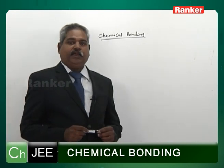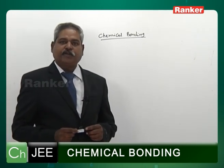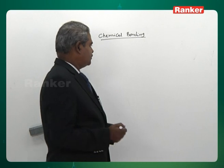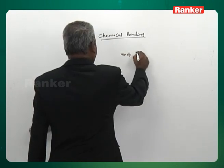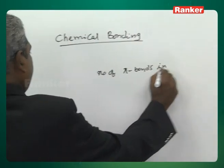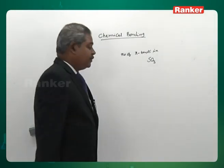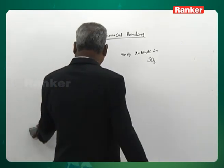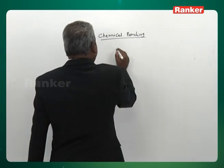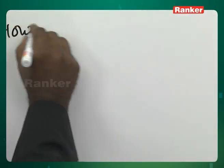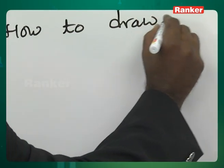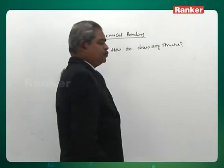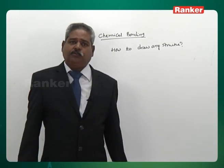What are the important things from an examination point of view, especially in competitive exams? We will be facing questions like: number of pi bonds in SO3 — how can you find that? You need to know the structure. So first things first: let us learn how to draw any structure, which covers most of the structures.